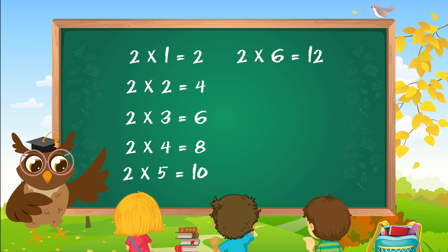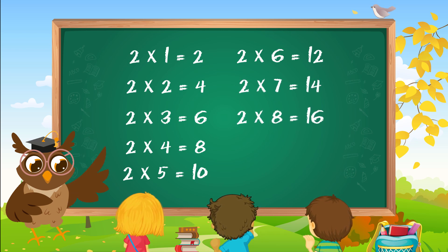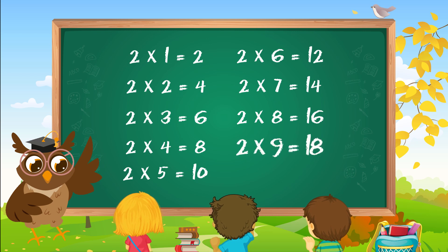Two six are twelve. Two sevens are fourteen. Two eights are sixteen. Two nines are eighteen. Two tens are twenty.